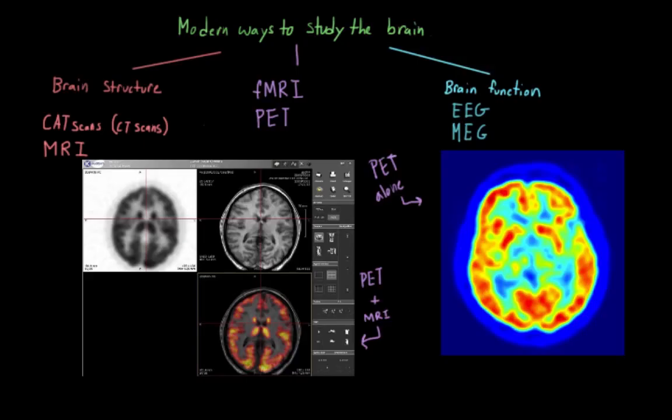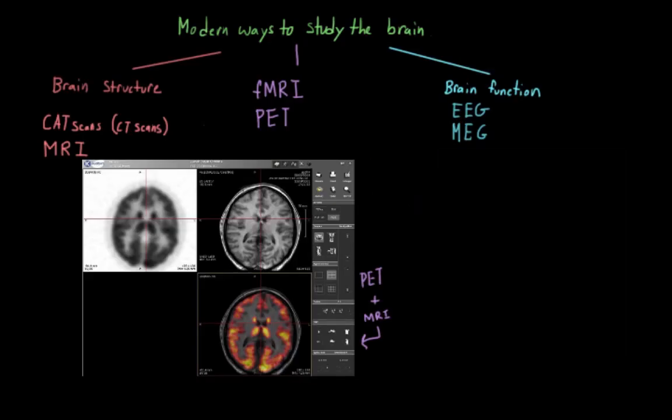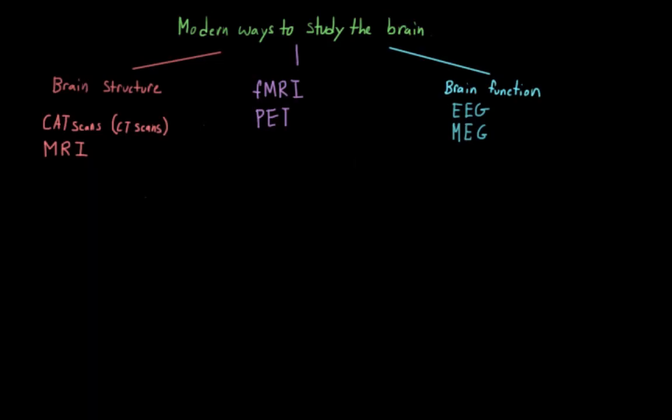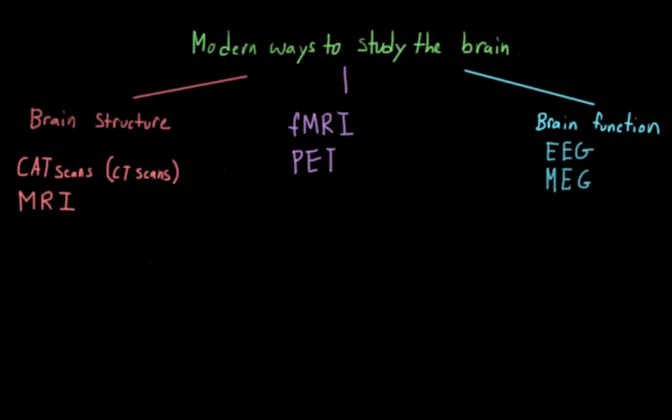But even so, fMRI is a lot more popular, at least within the social sciences. And this is probably because PET scans are a lot more invasive. You actually need to inject someone with a substance. And like I said, in future videos we'll go back and discuss each of these techniques in a lot more detail. But hopefully this gives you a good idea of how each of these different methods work and what they can be used to study.